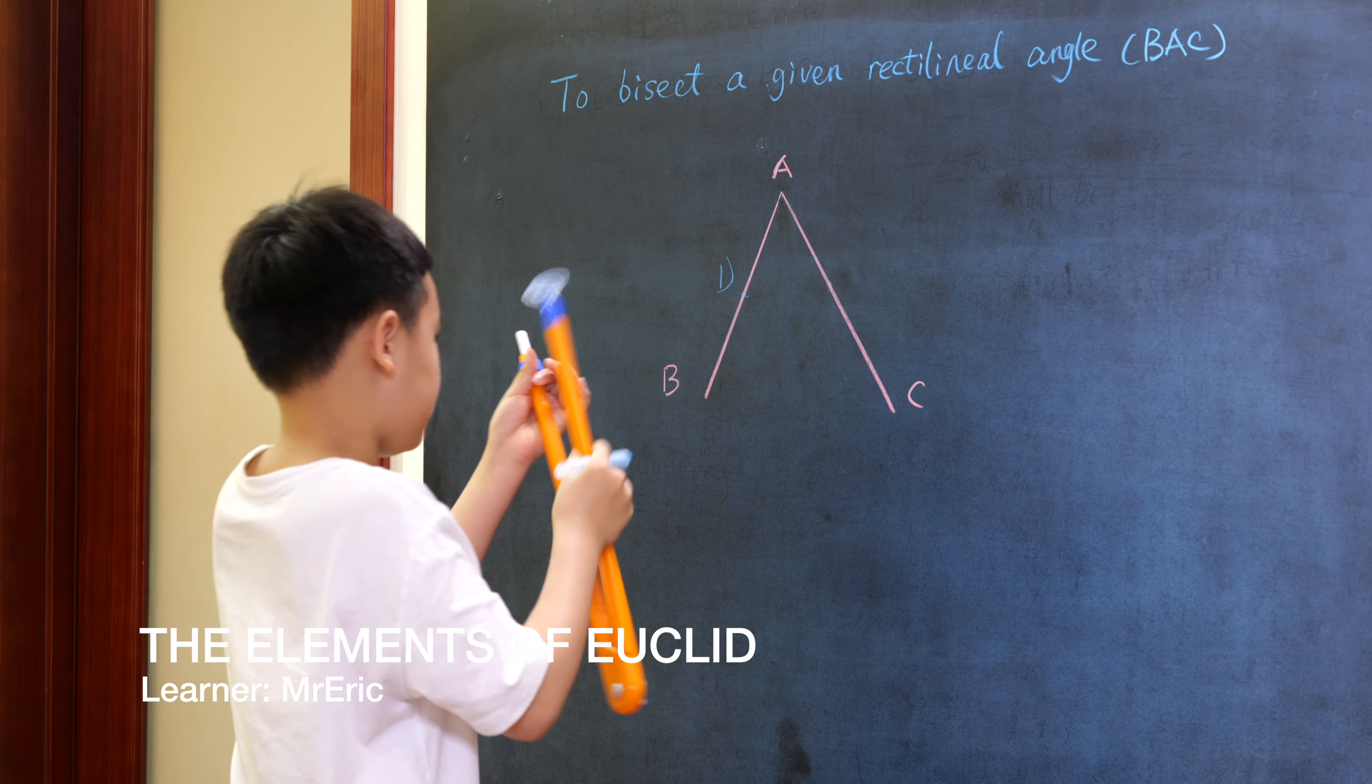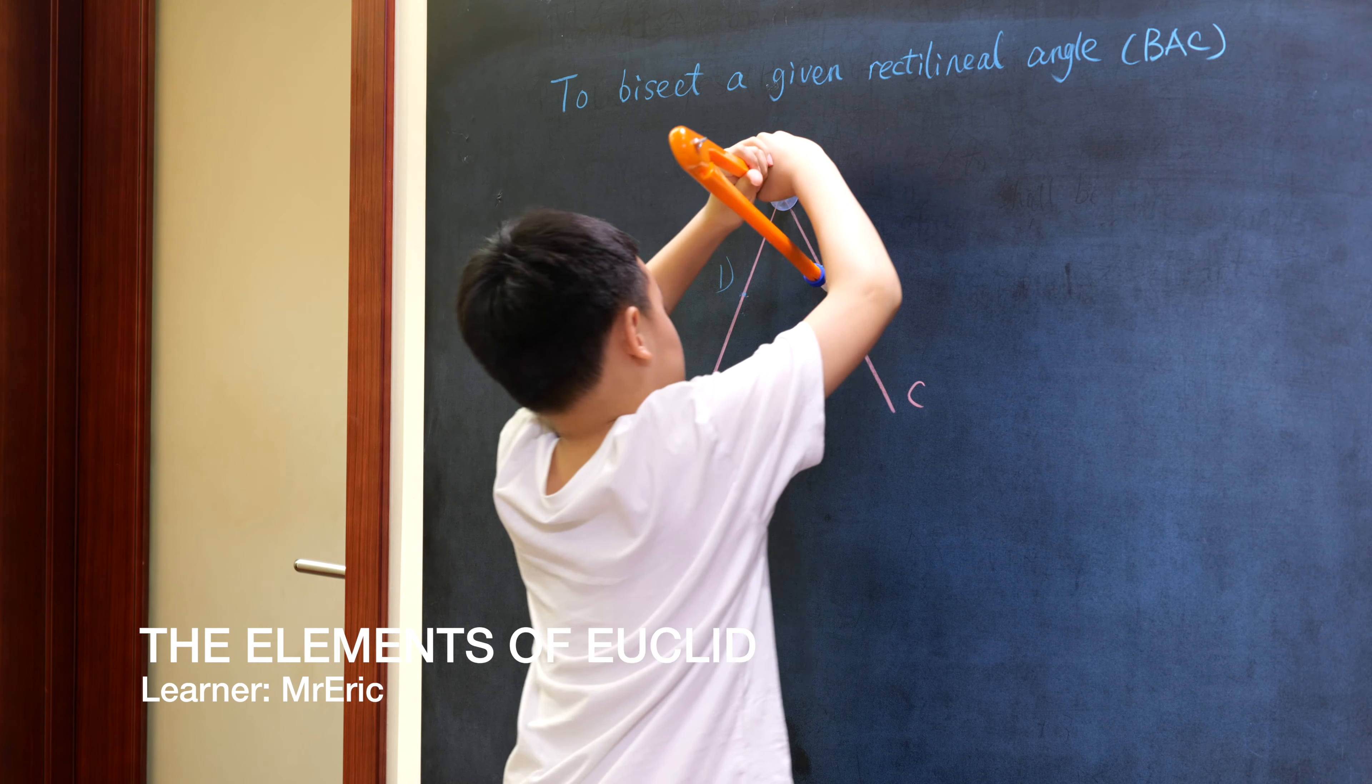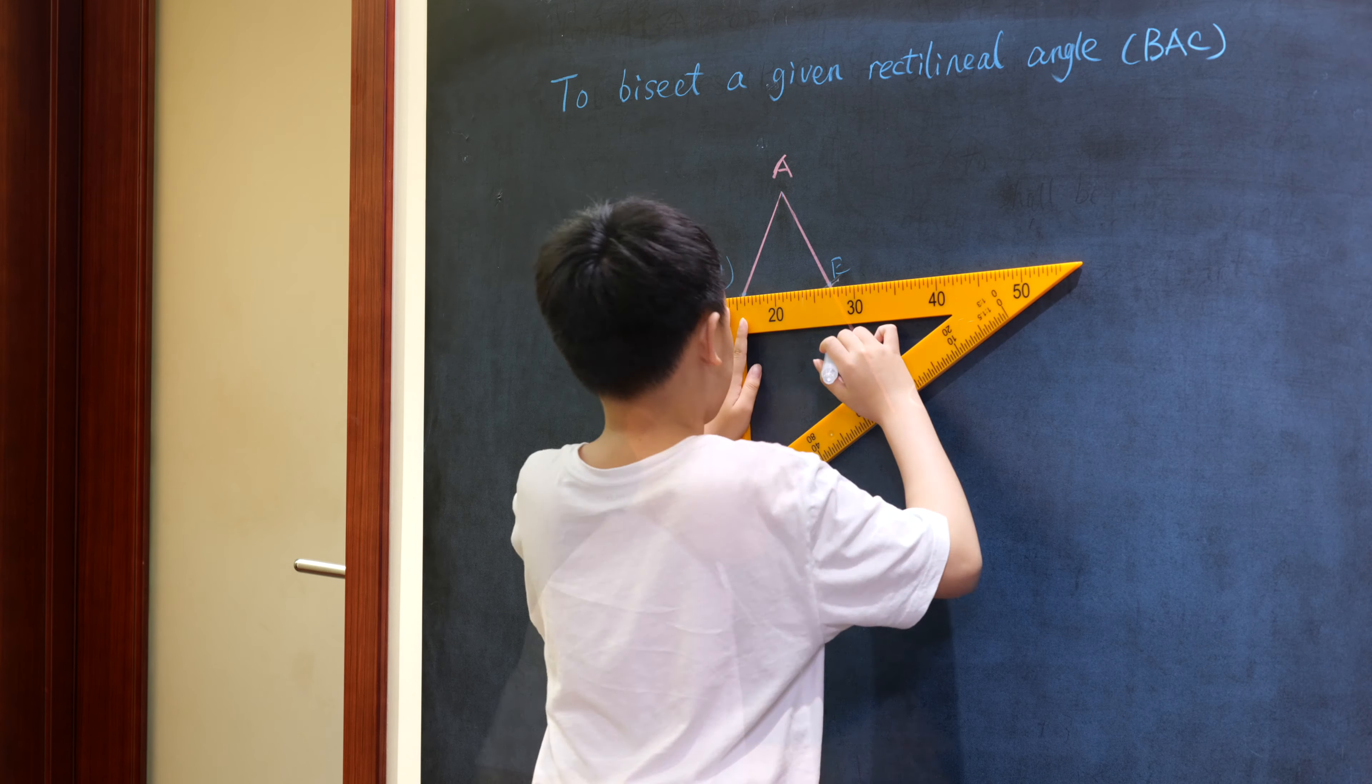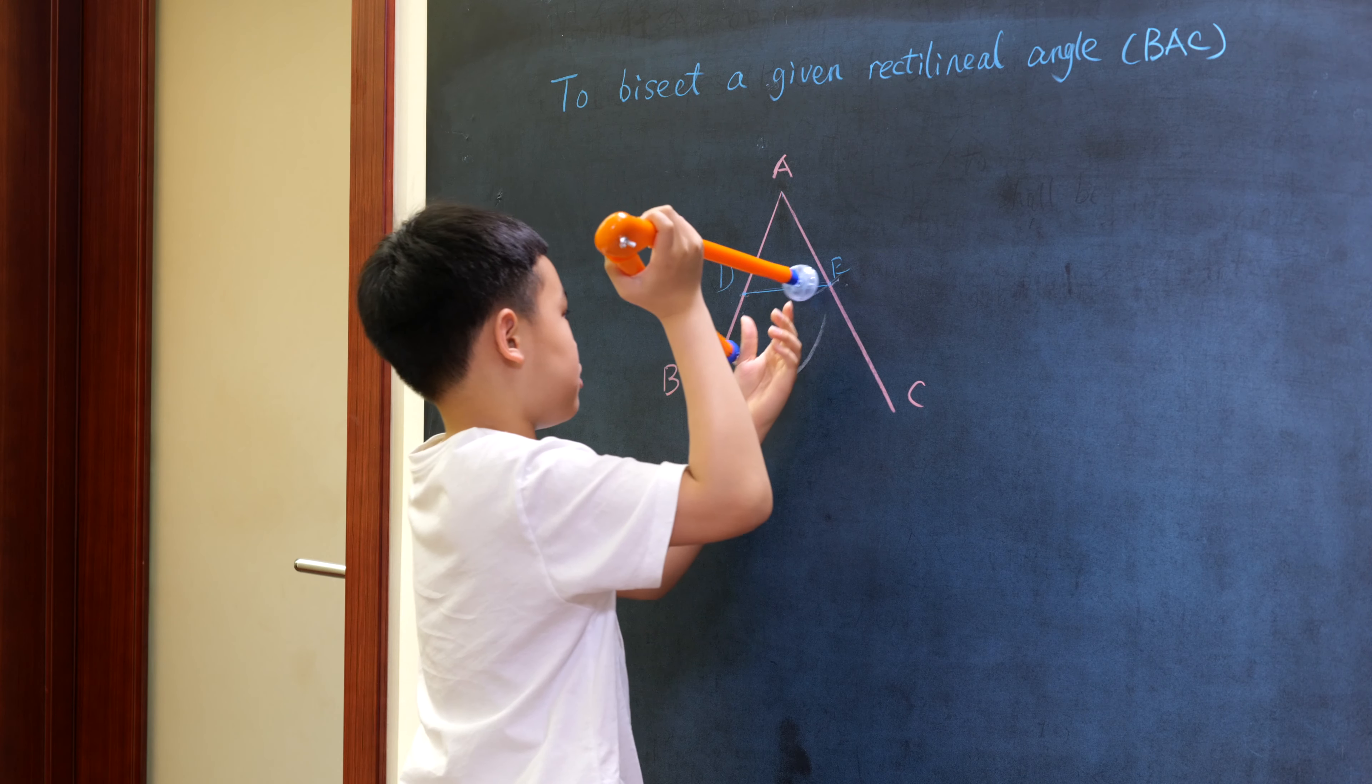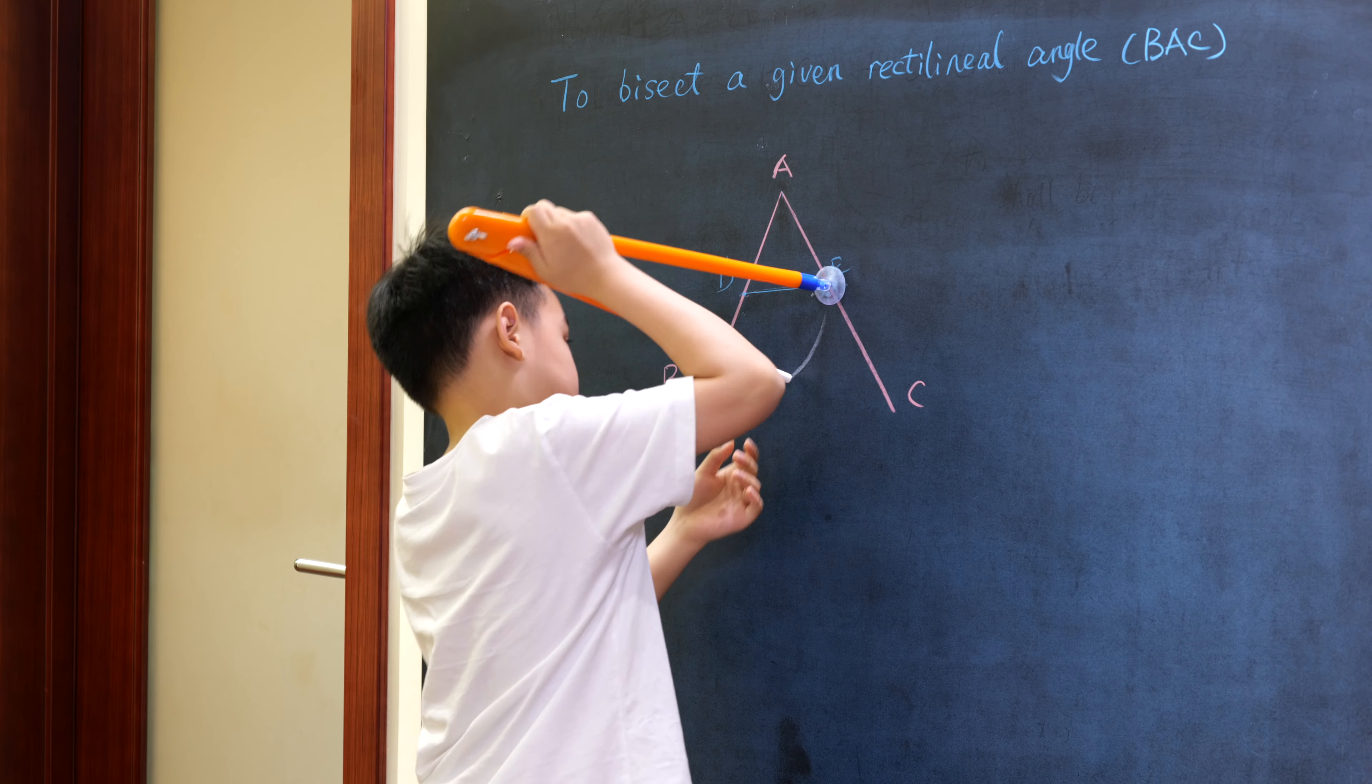Choose a random point D, then cut off E such that AD equals AE. Connect DE. Construct an equilateral triangle DEF based on DE.